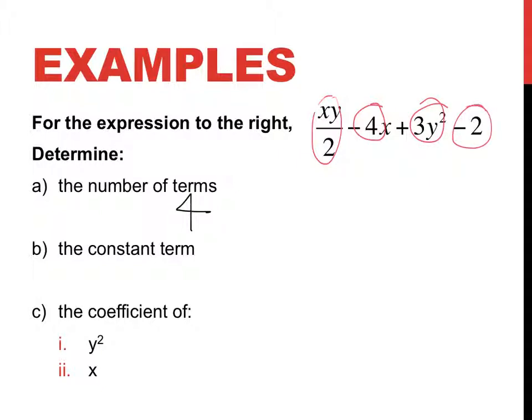Now, what's a term? Now, xy divided by 2 is a term because they are linked or they're married by division. Just like 4x is a term, we don't count the 4 and the x separately because they are joined together by multiplication.